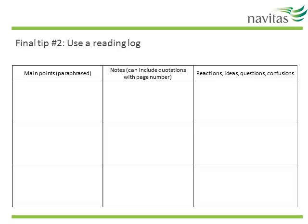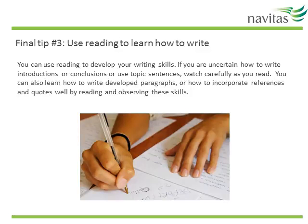Tip number two is to consider creating a reading log. This is a way to record and keep summaries of your sources that you will use in assignments. You can fill in the reading log by jotting down a note on each paragraph to make a short outline — this may simply be identifying the paragraph topic and some related points. The final tip is to use reading to develop your writing skills. If you are uncertain how to write introductions, conclusions, or use topic sentences, watch carefully as you read. You can also learn how to write developed paragraphs or incorporate references and quotes well by reading and observing these skills.